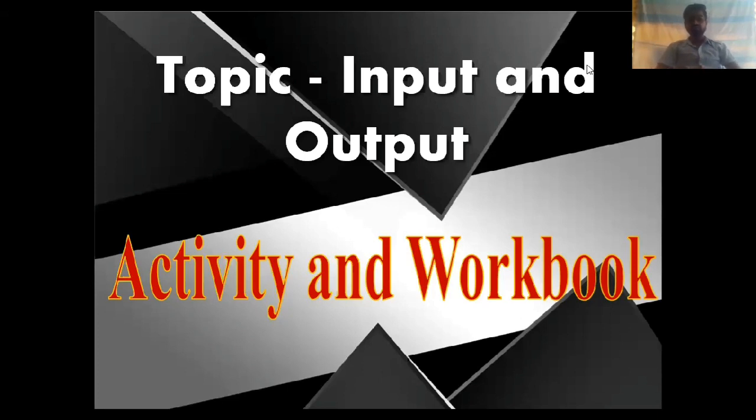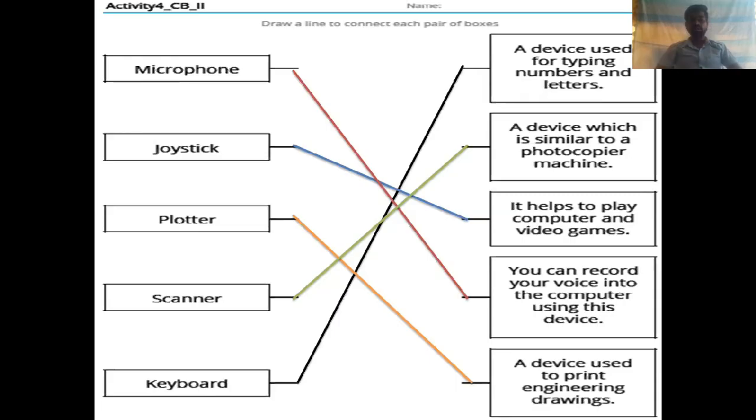Hello guys, today's topic is input and output devices and the subtopic is activity and verb. Today we are going to solve activity and verb. Activity number 4, the question is draw a line to connect each pair of boxes.